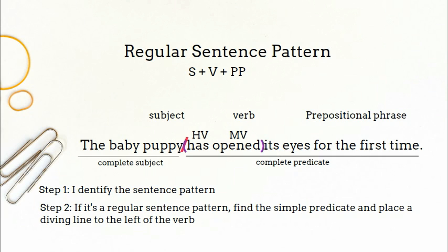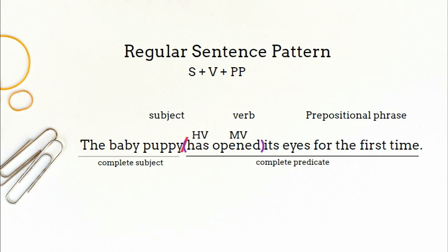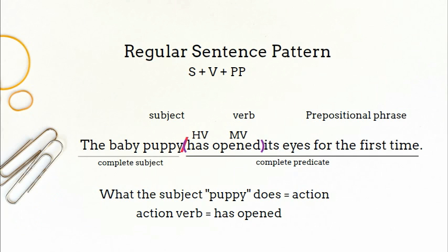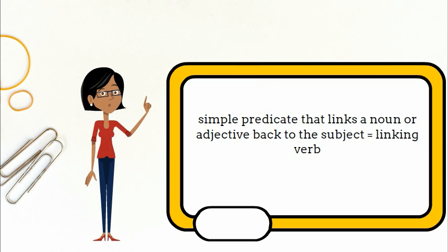You will find the simple predicate within the complete predicate. The simple predicate is either what the subject does, showing action, such as has opened, or a simple predicate that links a noun or an adjective back to the subject identifying or describing it.